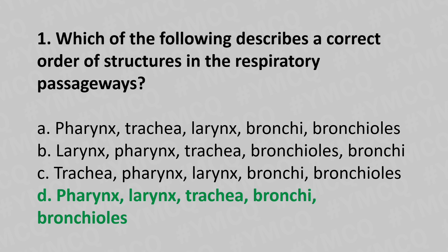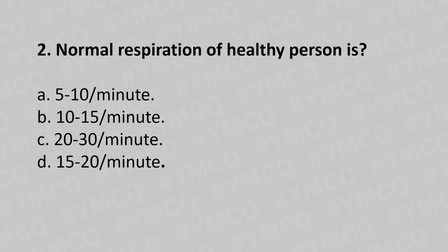Now let's move to question number two. Normal respiration of a healthy person is: option a, 5 to 10 per minute; option b, 10 to 15 per minute; option c, 20 to 30 per minute; option d, 15 to 20 per minute. And the answer is option d, 15 to 20 per minute.